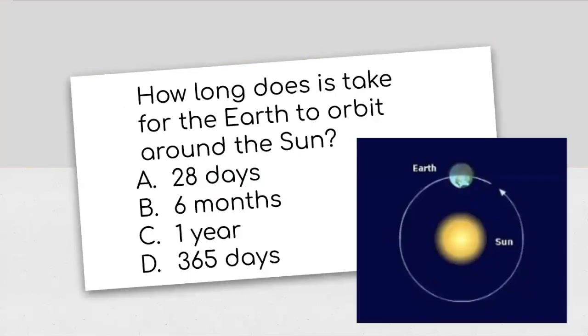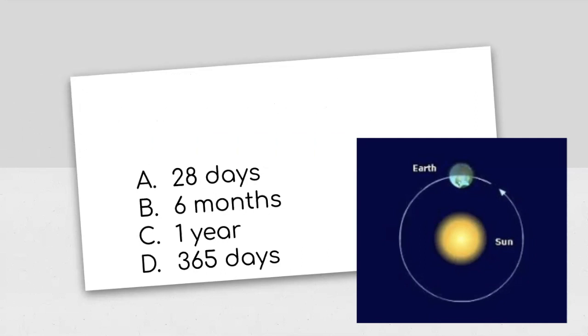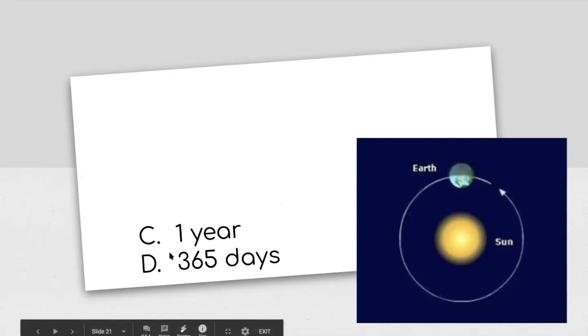How long does it take for Earth to orbit around the sun? Multiple choice here. Does it take 28 days, six months, one year, or 365 days? How long does it take for the Earth to orbit around the sun? It's not 28 days. That's how long it takes the moon to orbit the Earth. It's not six months. Either C or D were the correct answers. One year and 365 days are the same amount of time. It takes that long for the Earth to orbit the sun. One year.